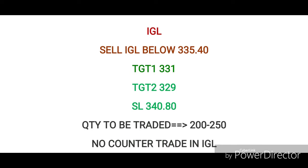IGL sell. We will trade at 335.40. First target is 331, second target is 329. Stop loss we will use is 340.80. Quantity is the same trade, 200 to 250. IGL has no counter trade.